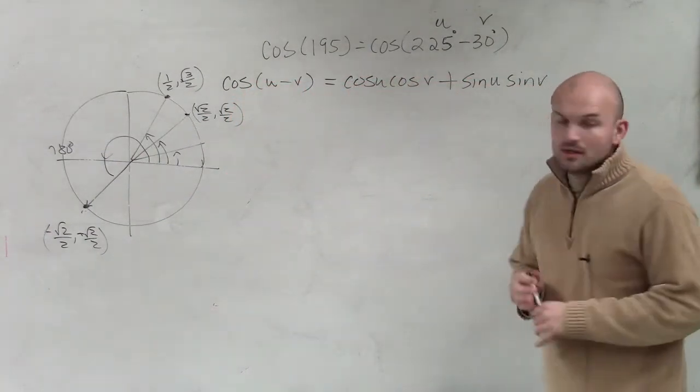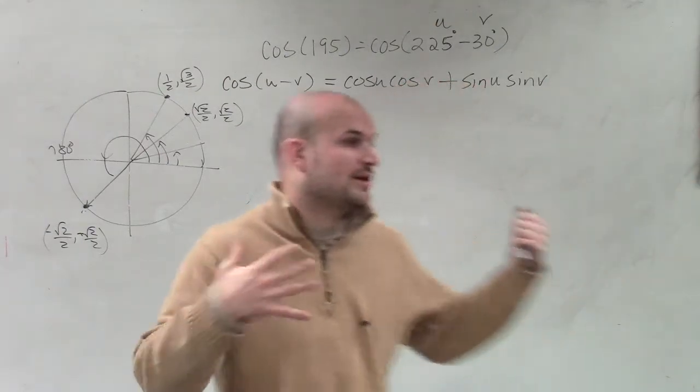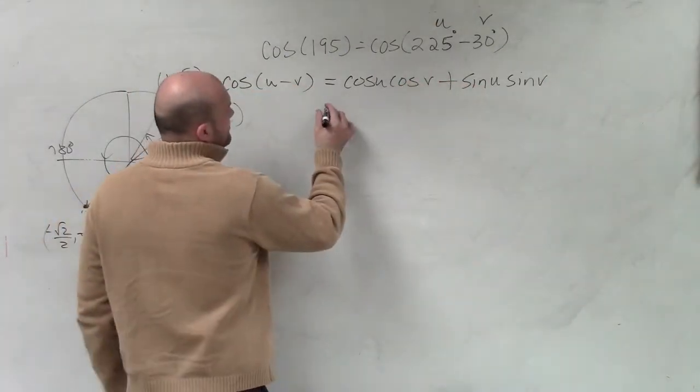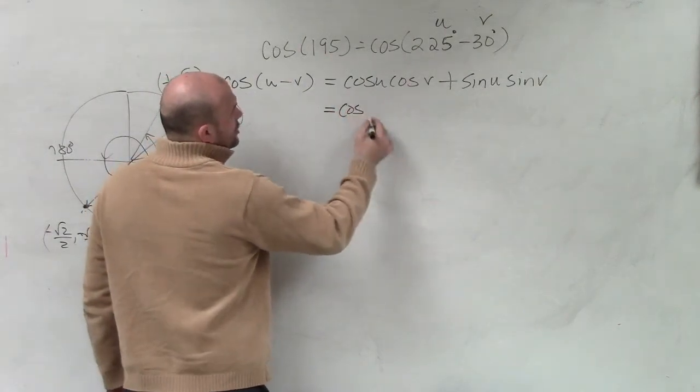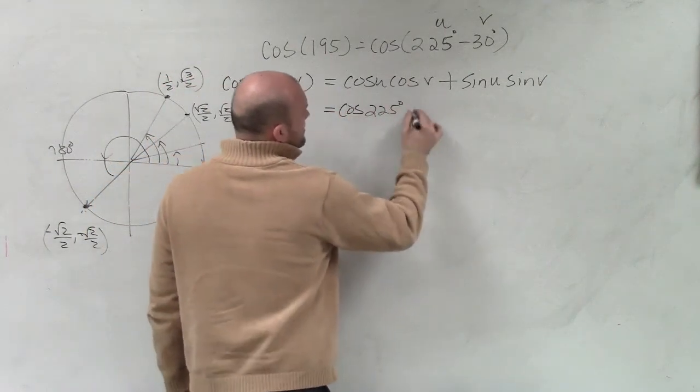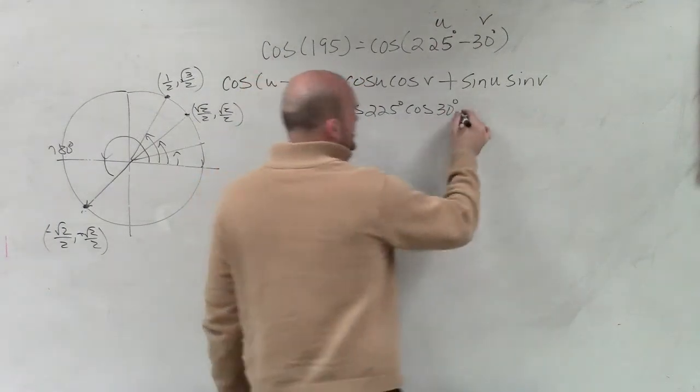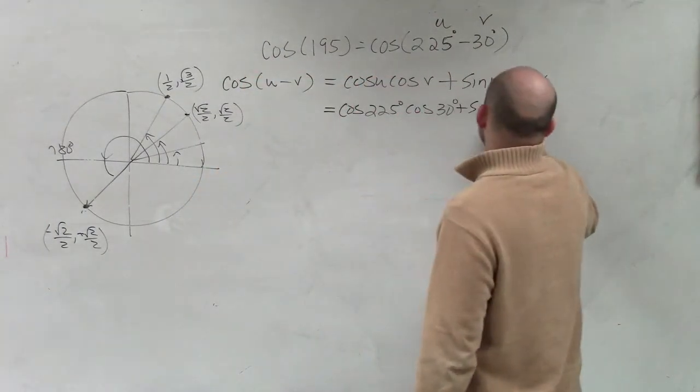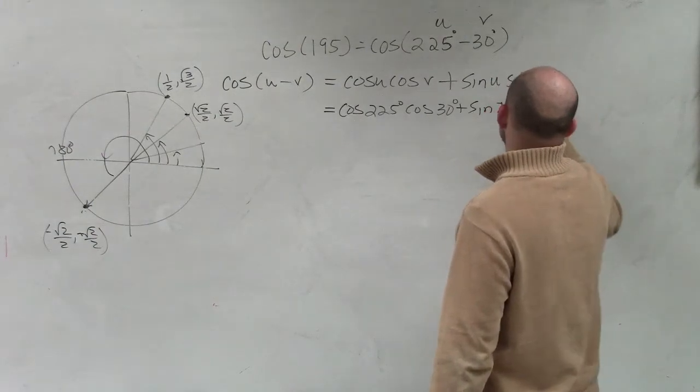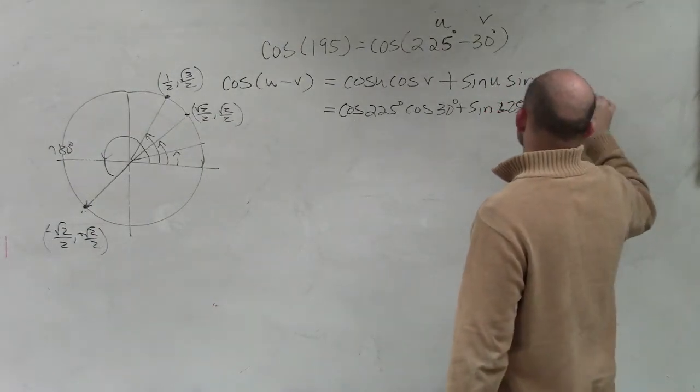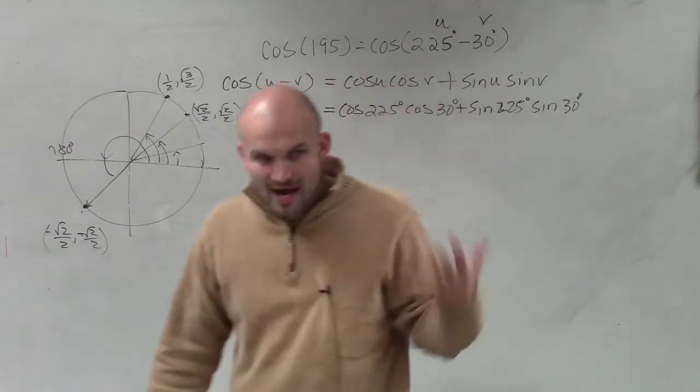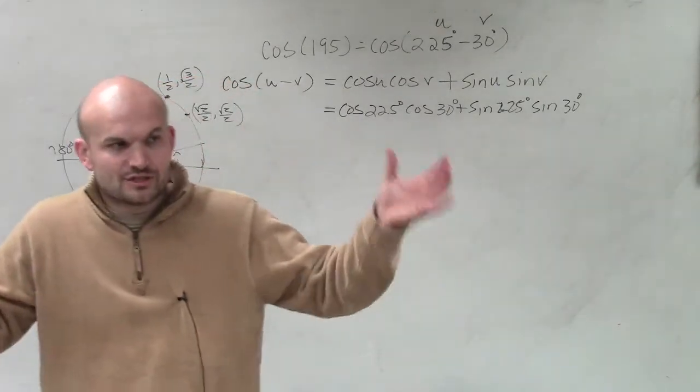So now the next thing I want to do is evaluate into my angles. So I'm taking the cosine of 225 degrees times the cosine of 30 degrees, not negative, of 30 degrees, plus the sine of 225 degrees times the sine of 30 degrees. Please note that 30 degrees is positive. You're subtracting two positive angles.